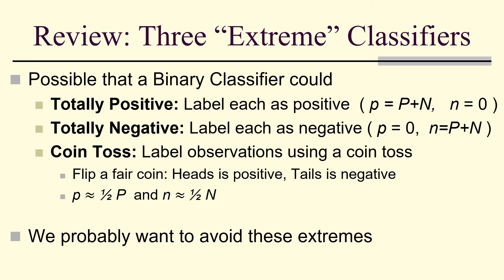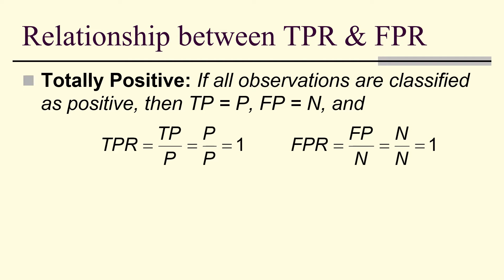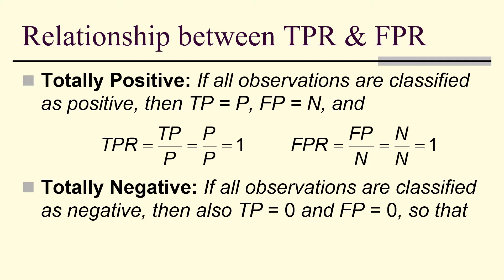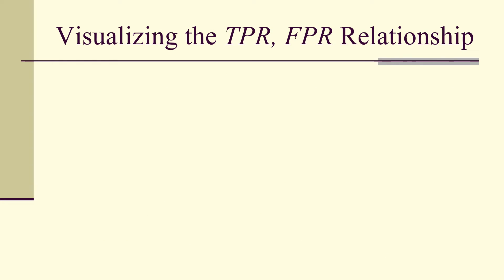These extreme classifiers aren't good — they're edge cases that completely ignore what's in the data itself. Looking at the true positive rate and false positive rate: for the totally positive classifier, false positives equal the negatives, so the true positive rate is 1 and the false positive rate is 1. For the totally negative classifier, true positives and false positives are both 0, so both rates are 0.